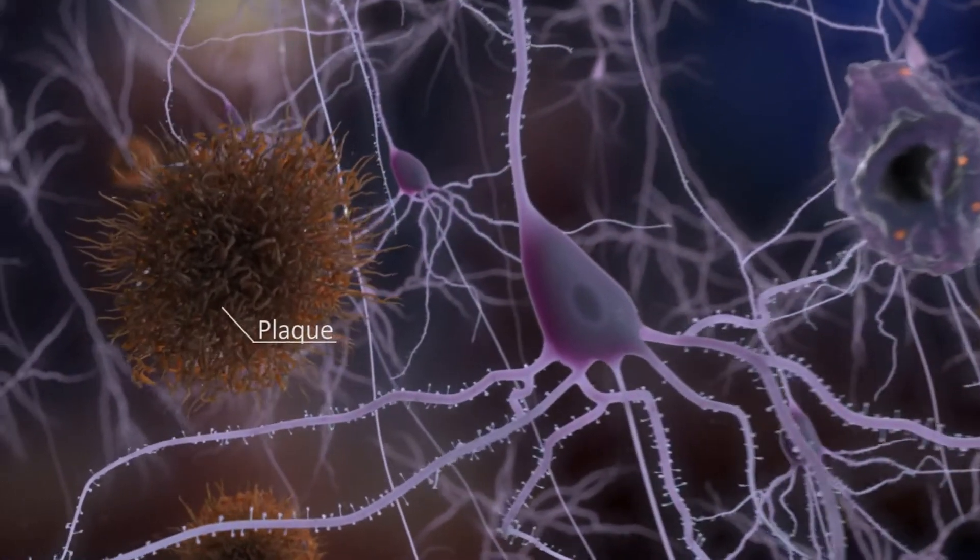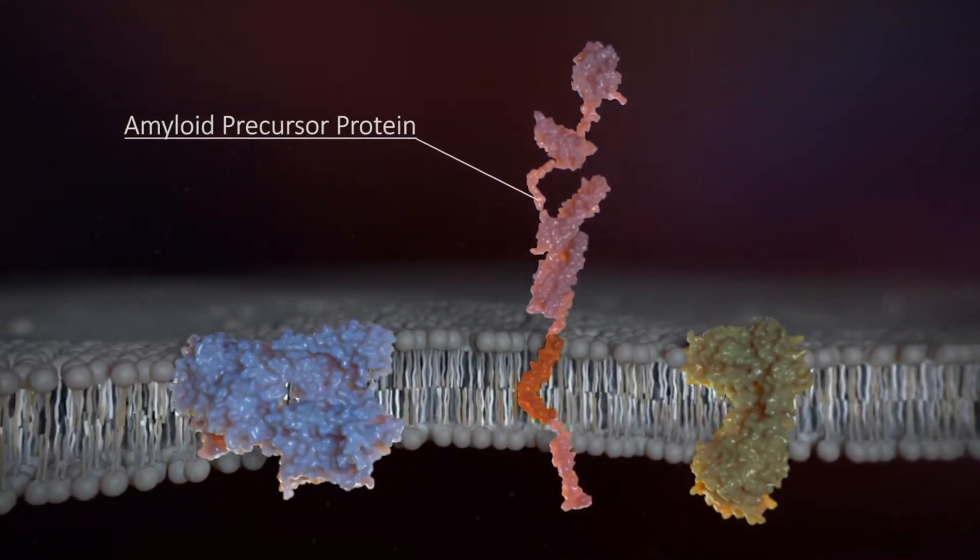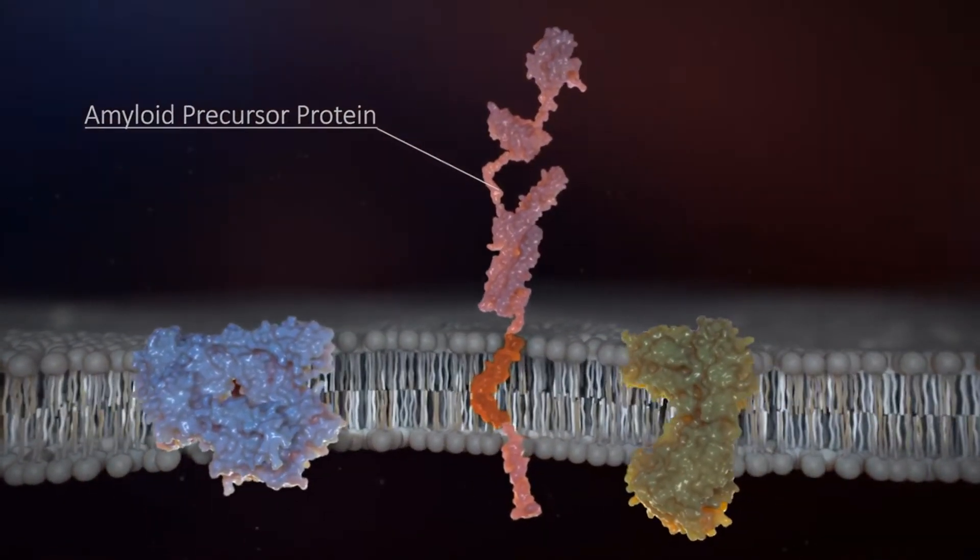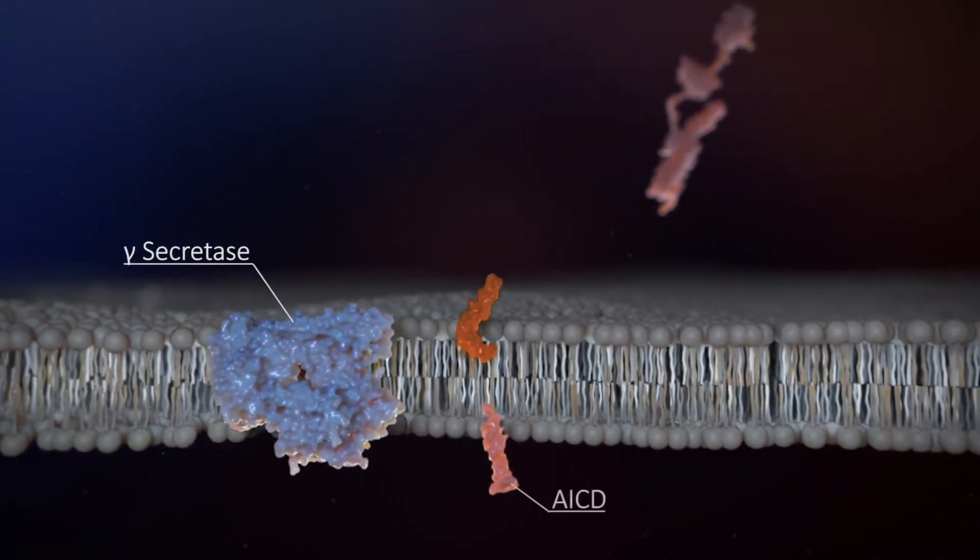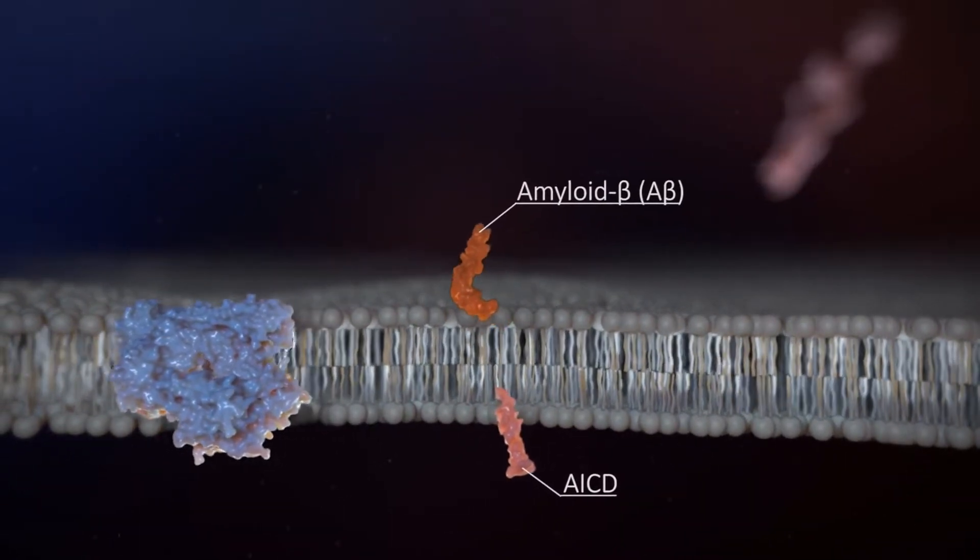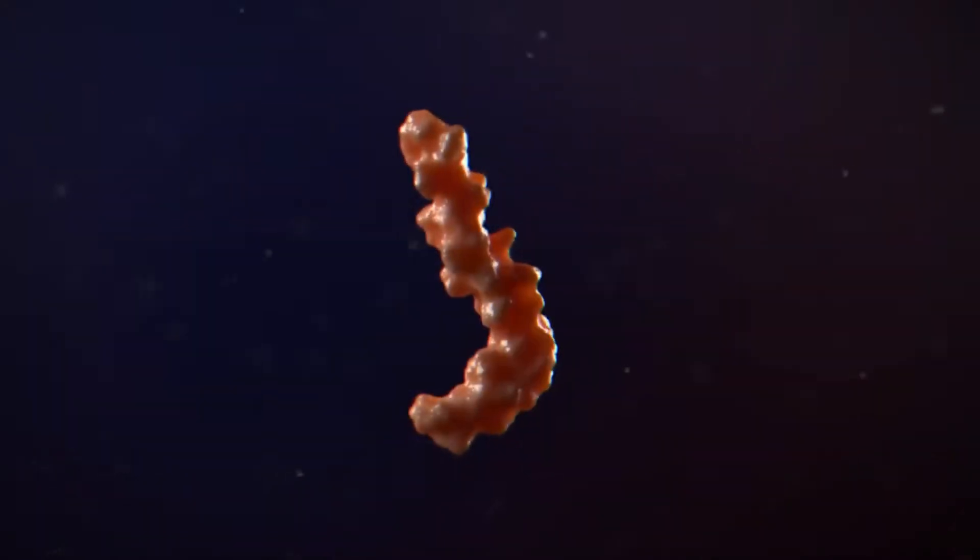Plaques are insoluble deposits of a peptide called amyloid beta, or Aβ, formed when a protein called amyloid precursor protein is sequentially cleaved by two enzymes: beta and gamma secretase. Other molecules are generated by this cleavage and may play a role in the disease, but Aβ is the main culprit. Aβ tends to misfold and become sticky.